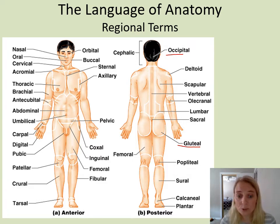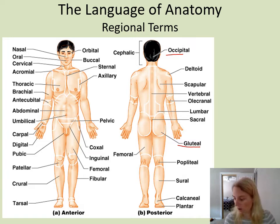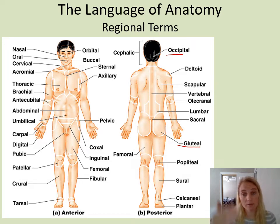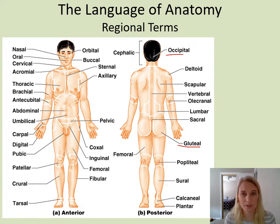I'm not going to go through all of these with you — this is something you need to work on. One suggestion is to find a blank picture — just go to Google Images and type in 'anatomical position' to get some blank pictures. Print those off and put them in plastic sleeves, like report covers. Get a fine-tipped dry erase marker and label the picture, then erase it and label it again. You don't have to waste paper — just keep labeling the same sheet over and over.